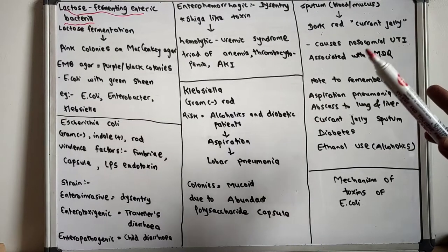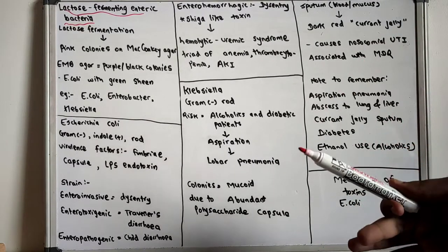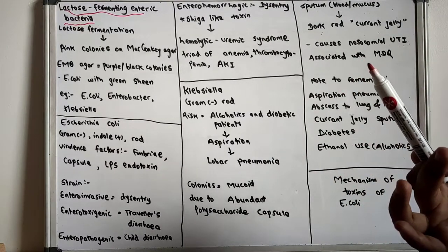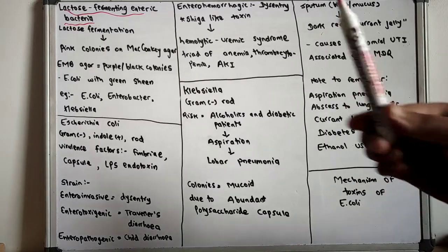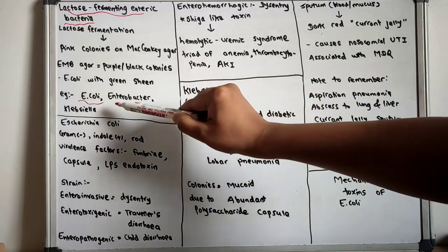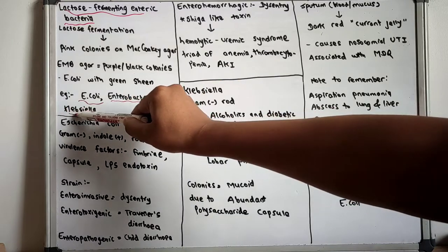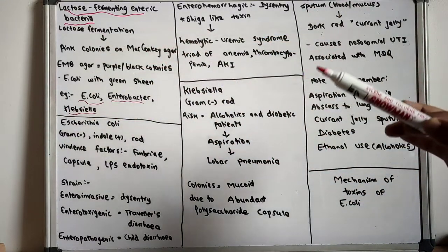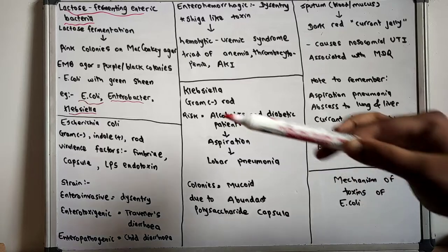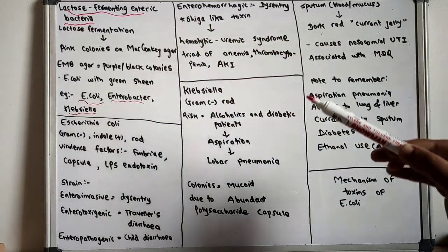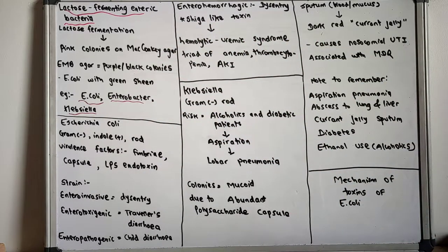You have to know that there are mainly three bacteria that ferment lactose: E. coli, Enterobacter, and Klebsiella. Among these three, you have to know in detail about E. coli and Klebsiella because they are of great importance in terms of various medical conditions.